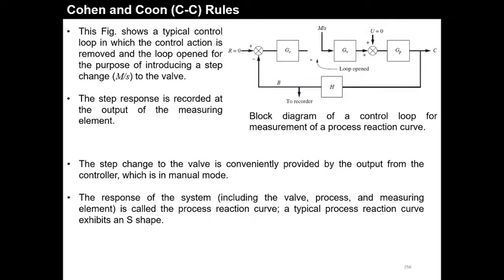This figure shows a typical control loop in which the control action is removed and the loop becomes open loop, for the purpose of introducing a step change. The step change to the valve is conveniently provided by the output from the controller in manual mode. The step change is applied on the valve side.